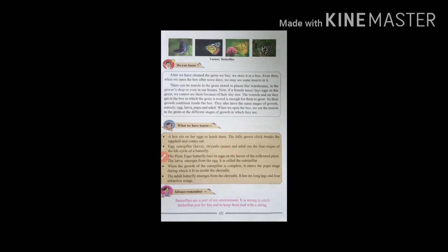Now if a female insect lays eggs in this grain, we cannot see them because of their tiny size. The warmth and air they get in the box in which the grain is stored is enough for them to grow, so their growth continues inside the box. They also have the same stages of growth, namely egg, larva, pupa, and adult. When we open the box, we see the insects in the grain at different stages of growth.